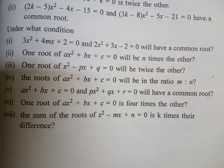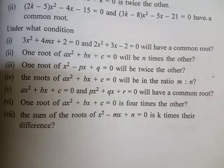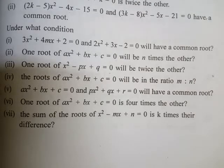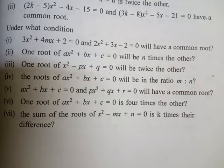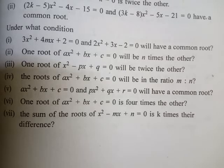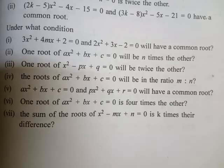We are going to solve Exercise 4.1, Class 10 Advancements, Question number 5 roman (v). The equations ax² + bx + c = 0 and px² + qx + r = 0 will have a common root. This is the question — we need to find out the condition.